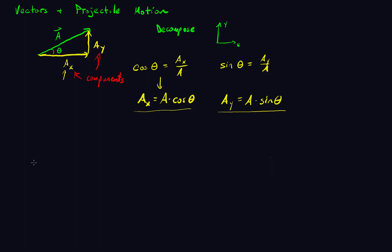For example, if I have a displacement vector of 15 meters at 30 degrees, I can determine what my displacement was in the X direction and what it was in the Y direction using these components.